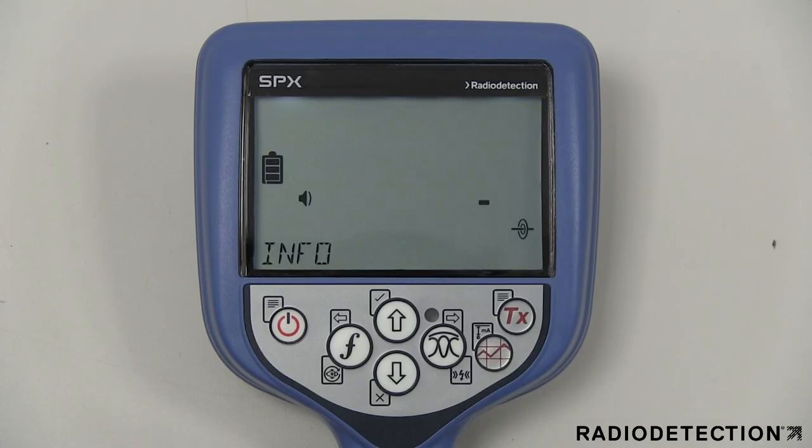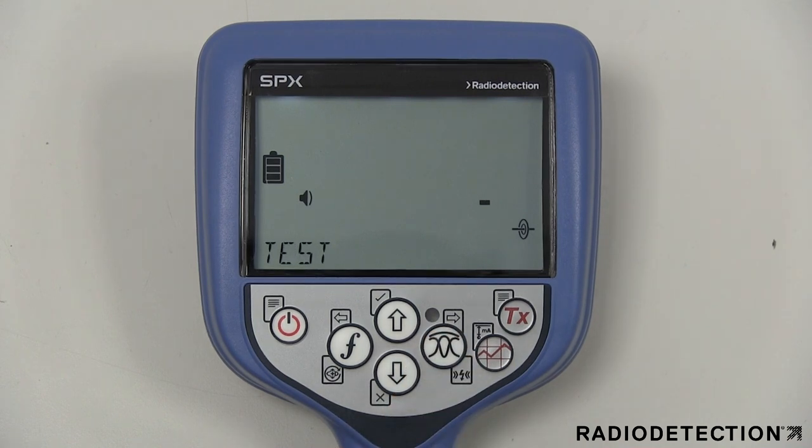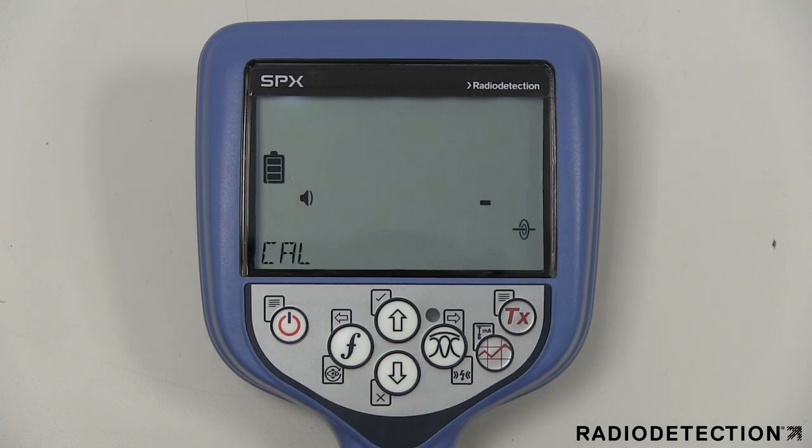The info menu option allows you to run a self-test, which checks the basic functionality of the locator. You can also display the date of the most recent service recalibration or the most recent e-search calibration.